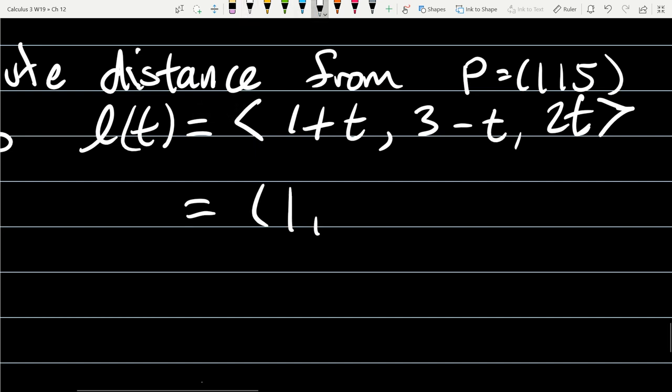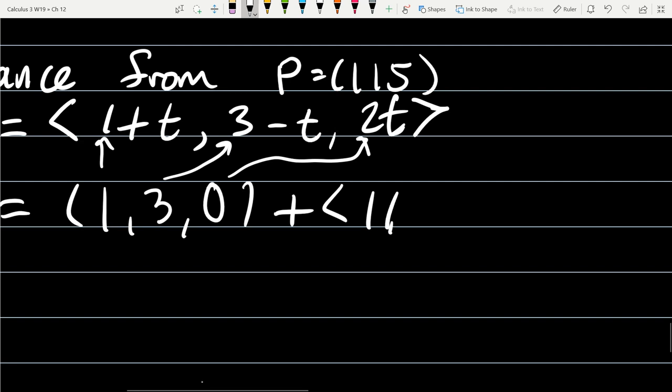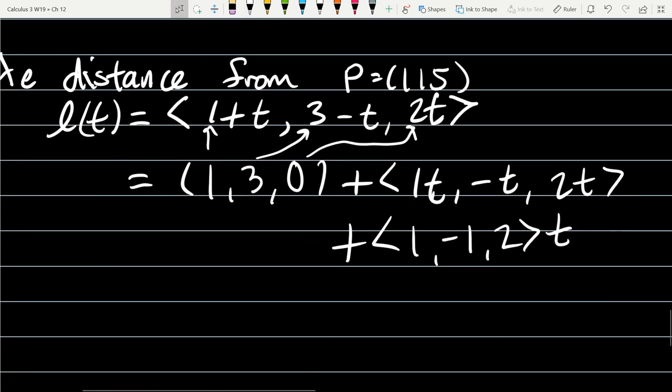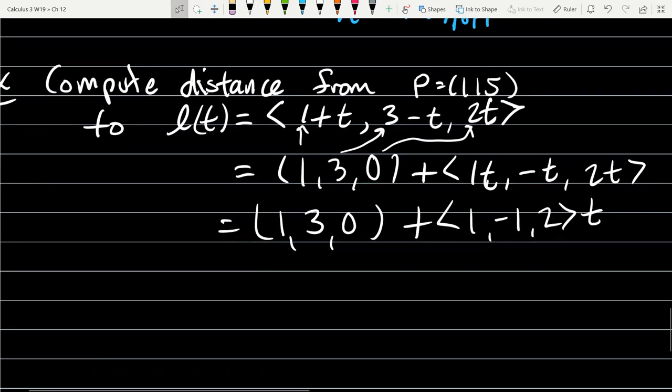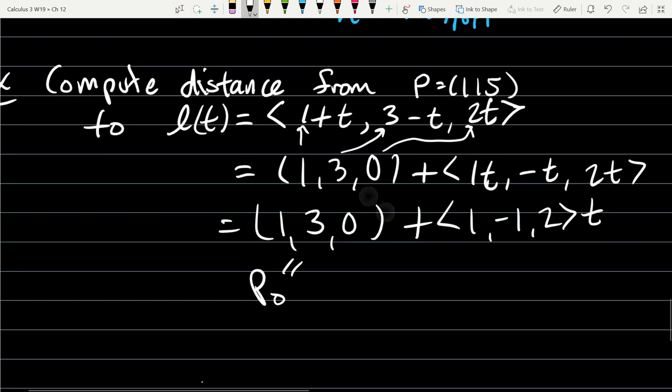The point is going to be (1,3,0). All I did was grab the constant. There's no constant in the third component, zero plus 2T. Plus, now the non-constant part, everything with a T, is (1T, -T, 2T). I'll write that as (1,-1,2), factoring the scalar out. So that is separated out. We can see P₀ and we can see V.